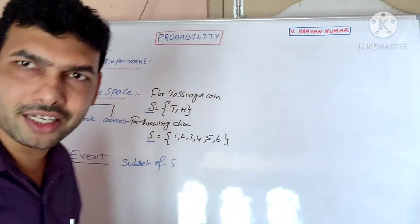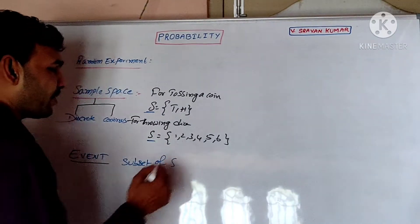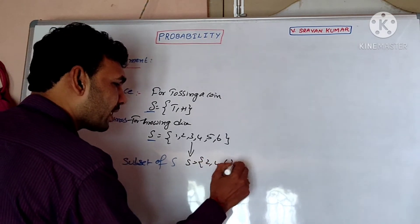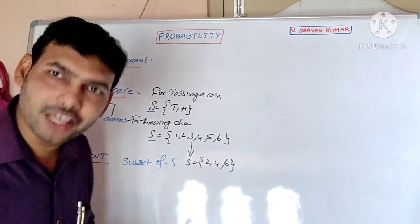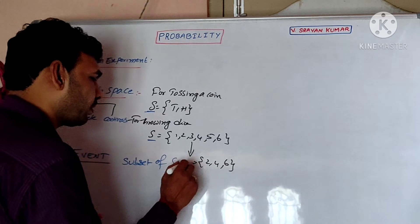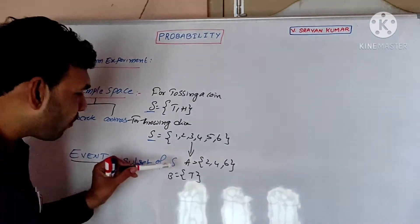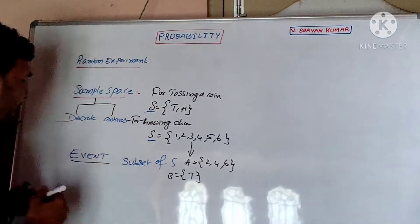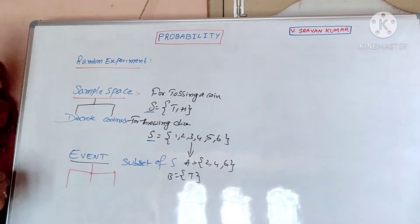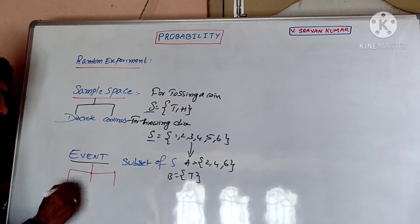Next we have the concept of an event. An event is a subset of the sample space S. For example, in a throwing-a-die experiment, getting an even number is an event. In tossing a coin, getting a tail is an event. If an event contains only one element, it is called a simple event.